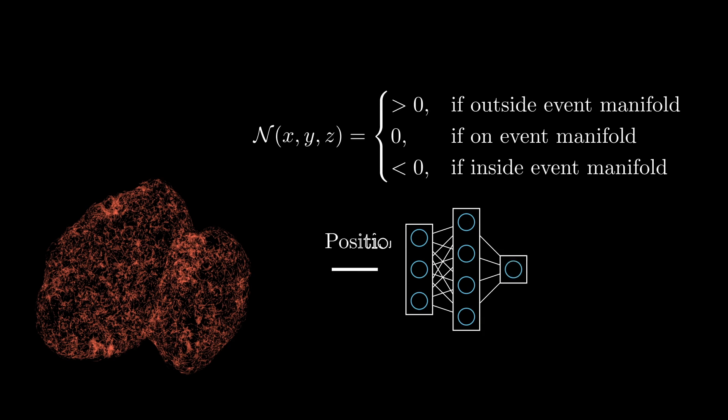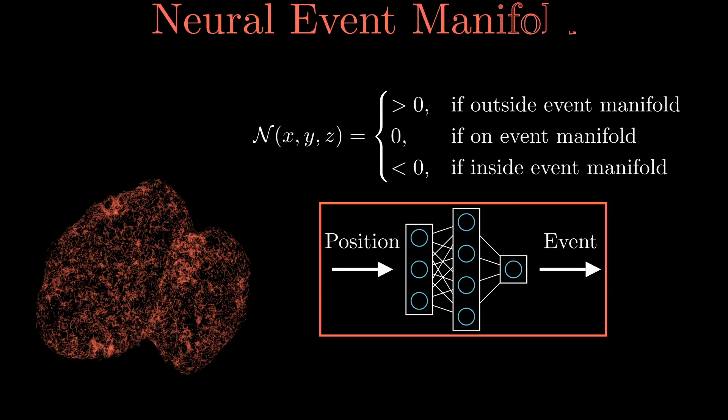We can then label each point inside the event with minus one and all points outside with plus one. We also use all points of the three-dimensional mesh and label these with zero. A small feedforward neural network can then be trained to represent the desired event manifold. Its zero crossings are at an altitude of 250 meters above the surface of the comet.